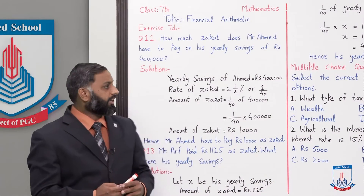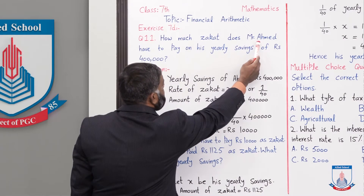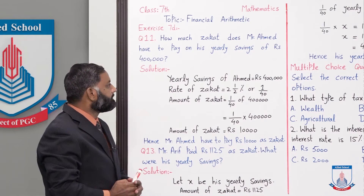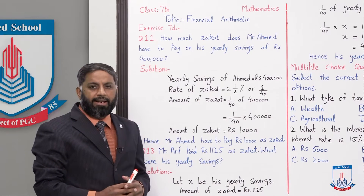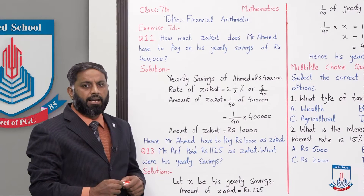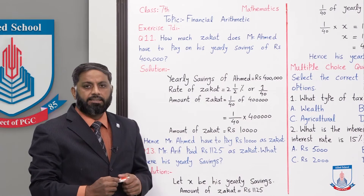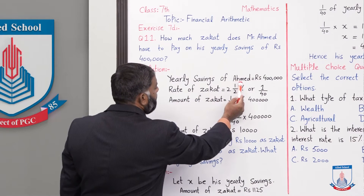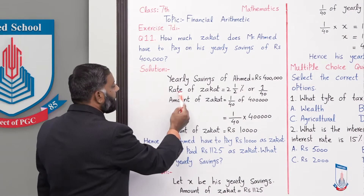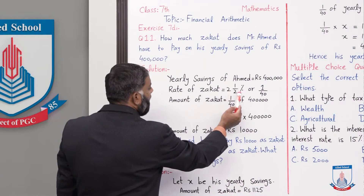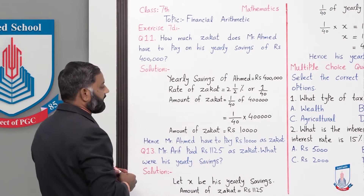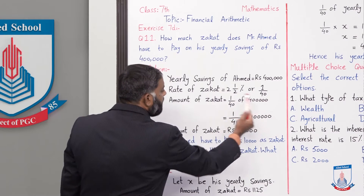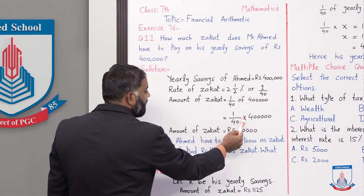Question number 11 hai: How much zakat does Mr. Ehmad have to pay on his yearly savings of rupees 400,000? Mr. Ehmad ki salana bachat 400,000 rupees hai, us ki hum ne zakat ki amount find karni hai. Yearly savings of Ehmad = rupees 400,000. Rate of zakat last lecture mein hum parh chuke hain: two and a half percent, ya isko 1 by 40 bhi likh sakte hain. To zakat ki amount find karenge: 1/40 of yearly savings.